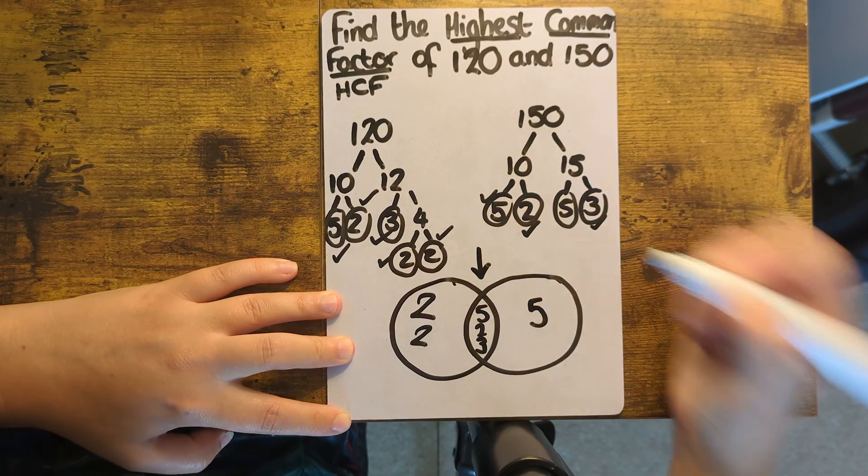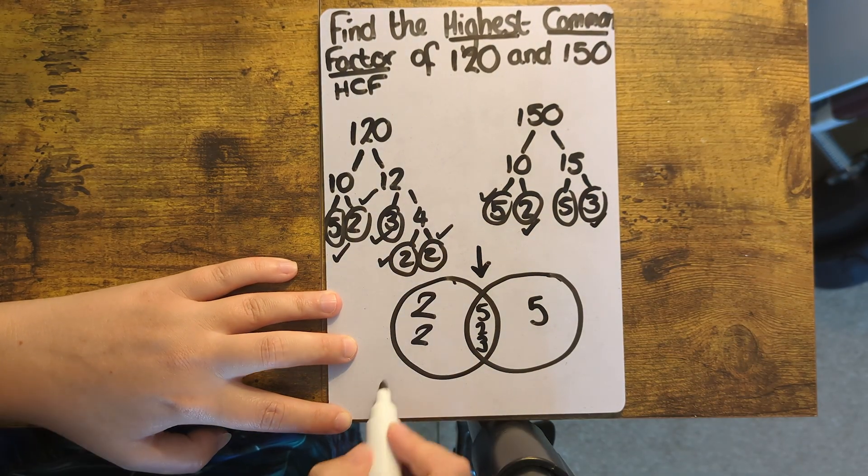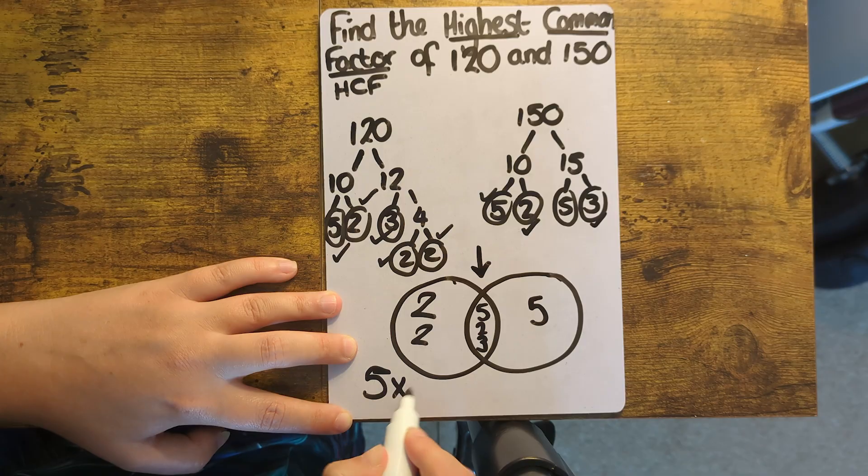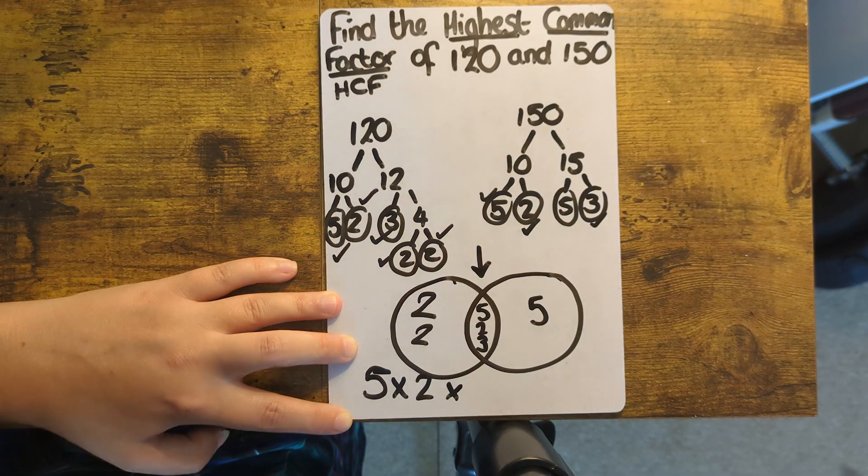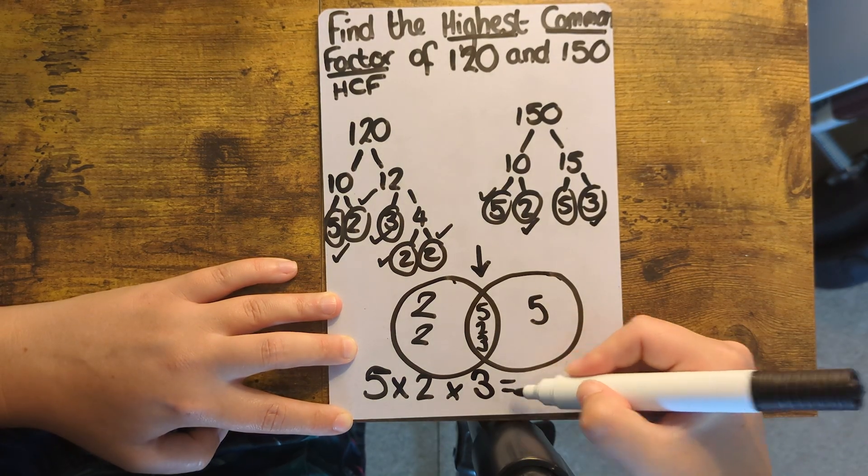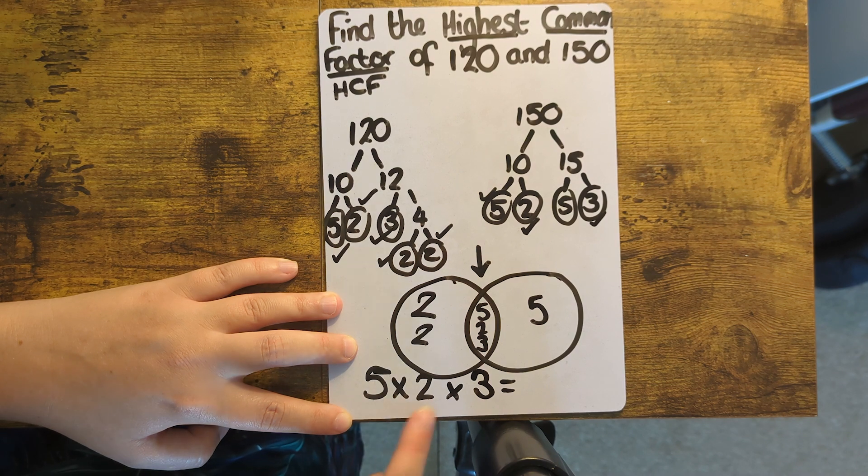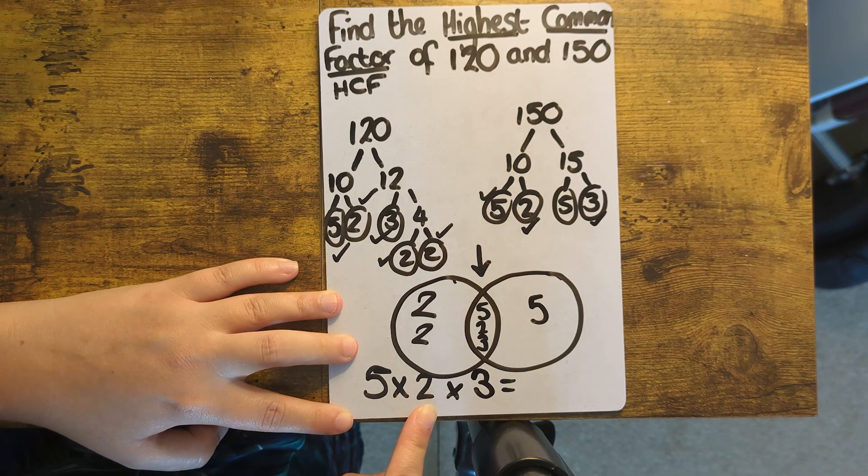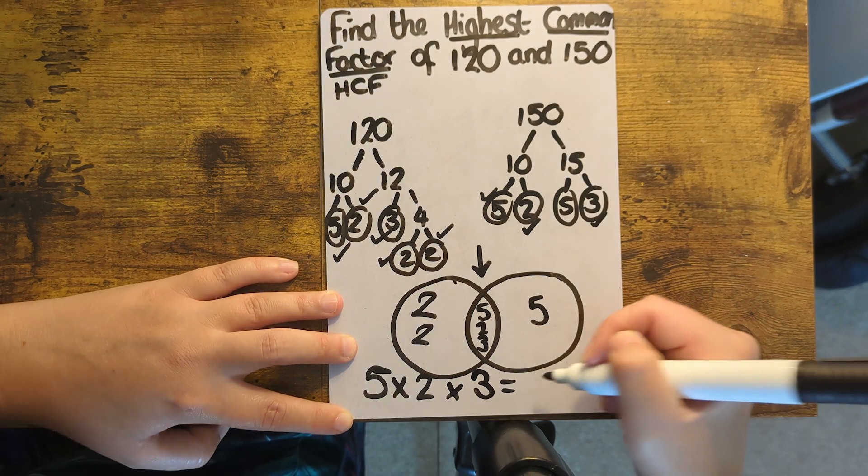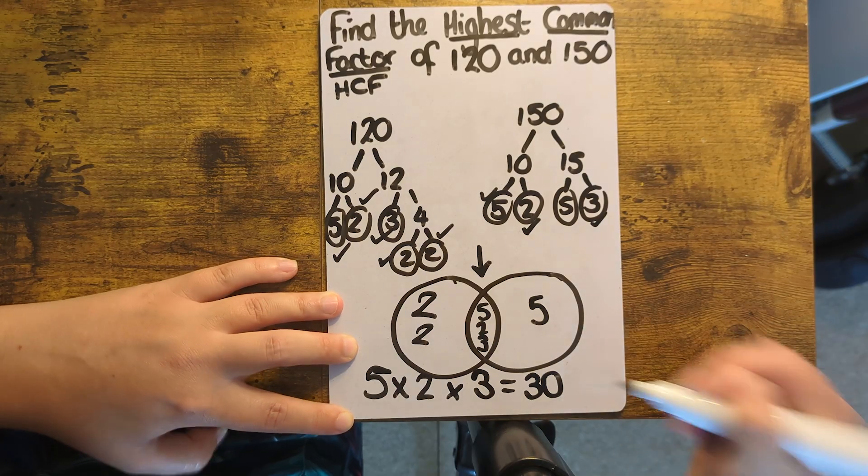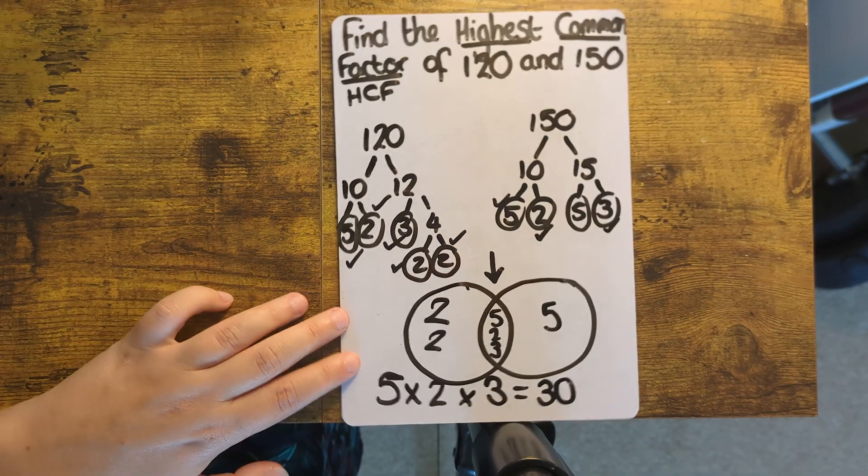Now for the HCF, you only need the numbers in the overlapping bit of the circle, and you need to multiply these together. So five times two times three. So five times two is 10, times three is 30. So 30 is the biggest times table you see both 120 and 150 in.